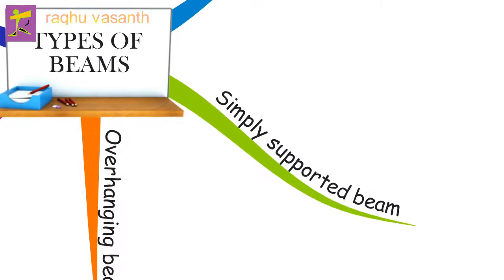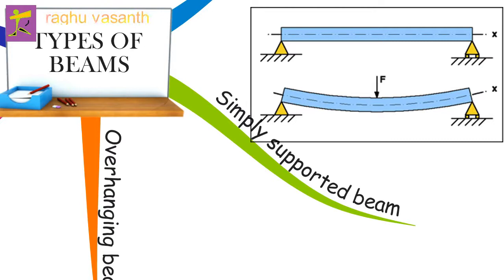A simply supported beam is supported on the ends which are free to rotate and have no moment resistance. It has pin support at one end and roller support at the other end. Depending on the load applied, it undergoes shearing and bending. It is one of the simplest structural elements in existence.